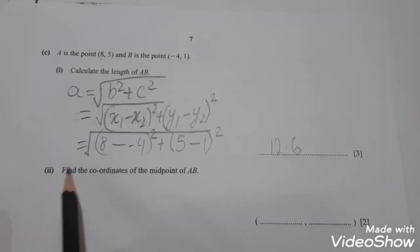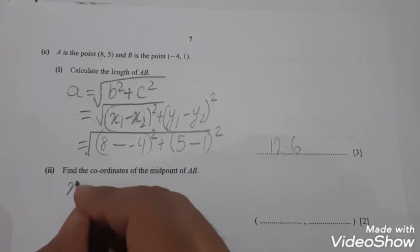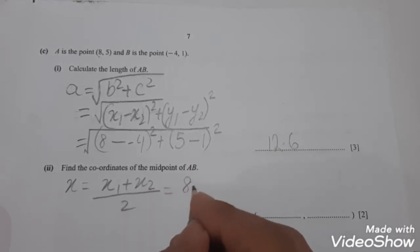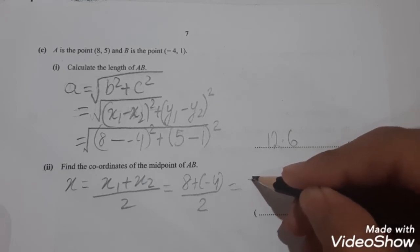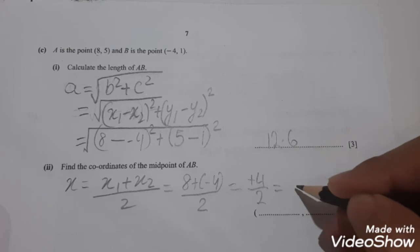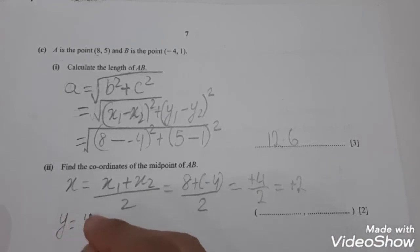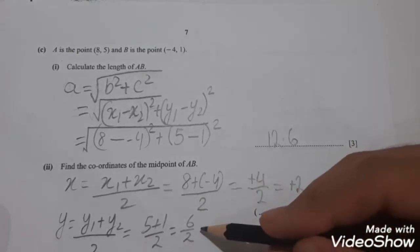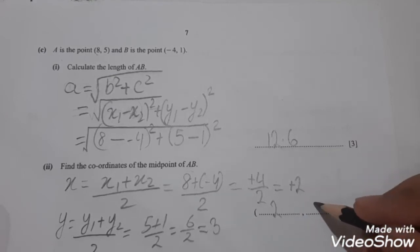Question 4 part C part 2 states: find the coordinates of the midpoint of A and B. For the x-coordinate: x equals (x1 plus x2) divided by 2, which is (8 plus minus 4) divided by 2, giving 2. For the y-coordinate: y equals (y1 plus y2) divided by 2, which is (5 plus 1) divided by 2, giving 3. So the coordinates of the midpoint are (2, 3).